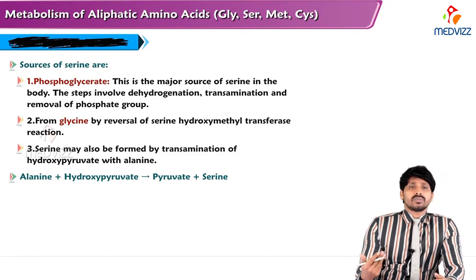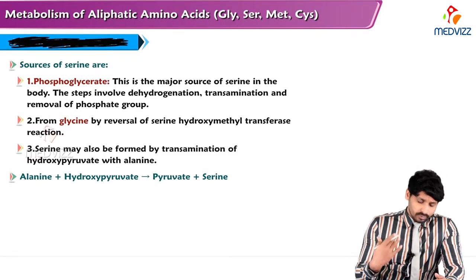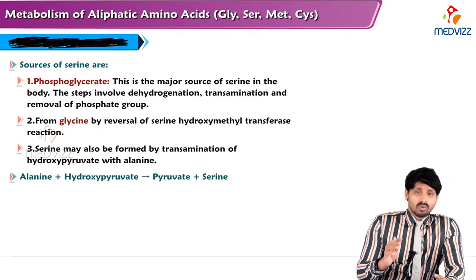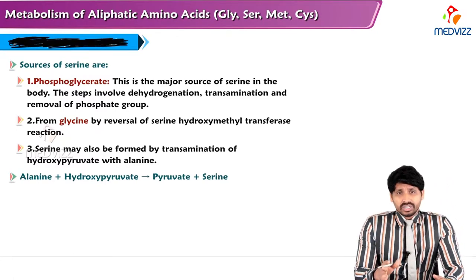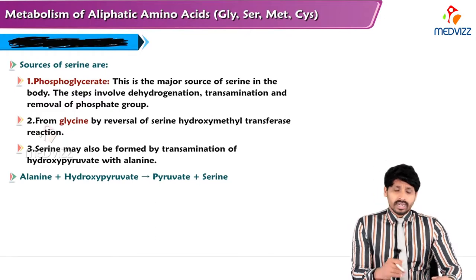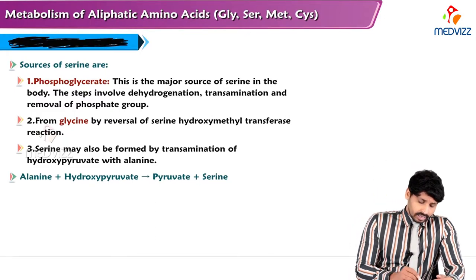First, we will see what are all the sources of serine in our body. 3-phosphoglycerate is a major source of serine in the body. The steps involved are dehydrogenation, transamination, and removal of the phosphate group — and with this you can make serine.